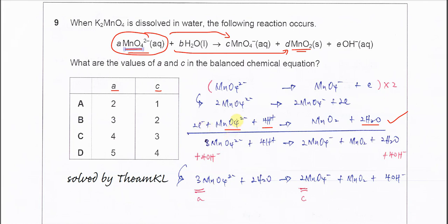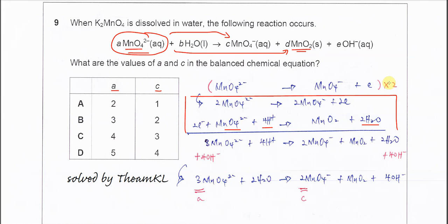Once you have done that, combine these two equations. For the first half-equation, you have to multiply by 2, to make sure the electron numbers become 2, so they can be eliminated later. Then sum up the two equations, left to left and right to right.